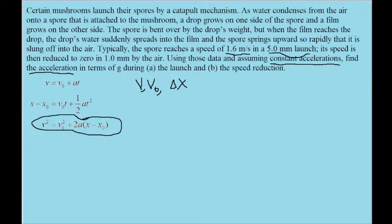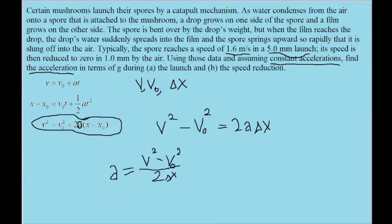The first thing I'll do is subtract v naught squared from both sides of the equation to get the term containing the A on its own. Next, to get the A itself on its own, I'll divide both sides of this equation by 2 times delta x. So this is the equation that we'll end up with.